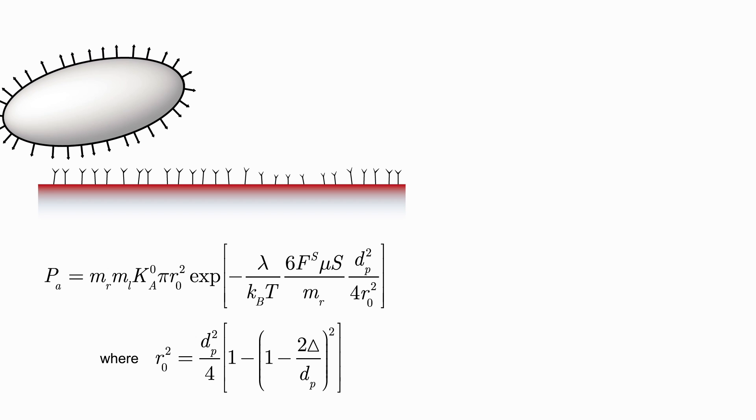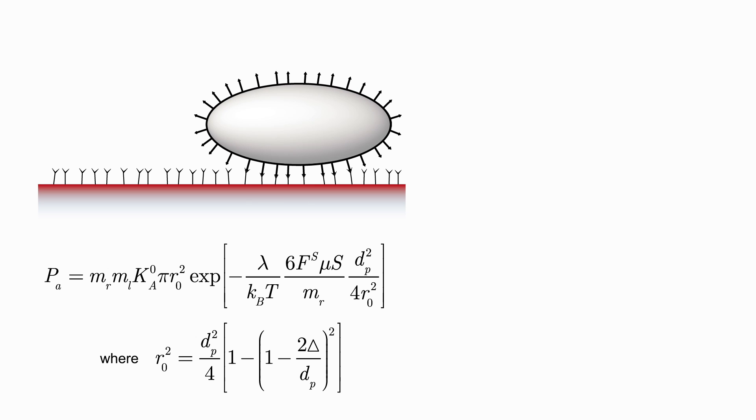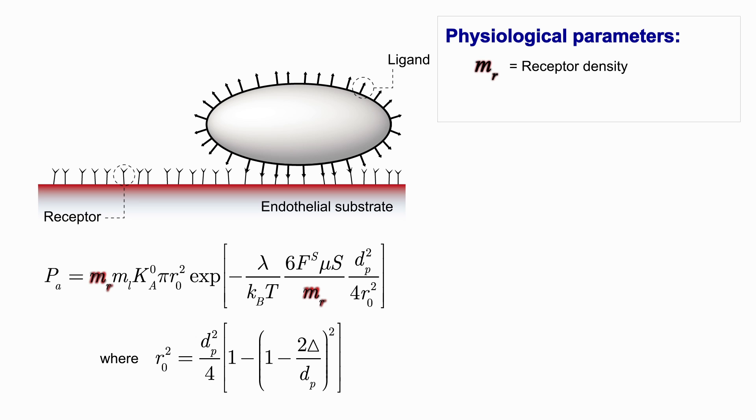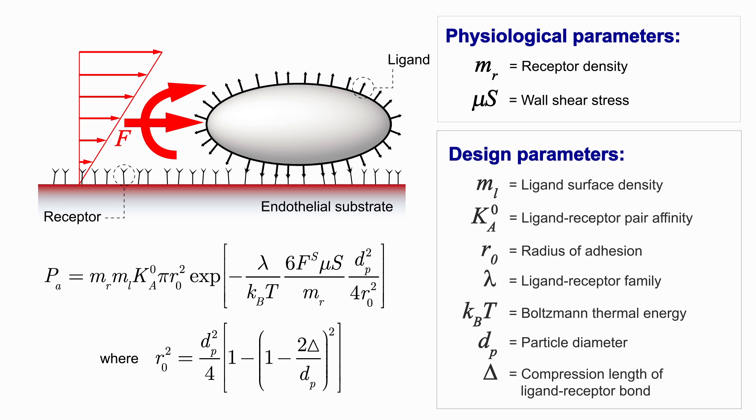The probability of a particle firmly adhering to the artery wall depends on a number of physiological parameters, such as the number of receptors overexpressed at the diseased wall, the wall shear stress, and hydrodynamic forces that tend to dislodge the particles, as well as certain particle design parameters, including the shape and size, the number of ligands on the particle surface, and the affinity between the specific ligand-receptor pairs.